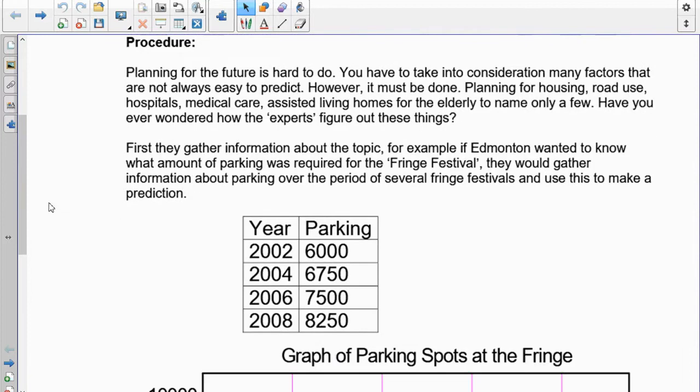When you plan for the future, it's pretty hard because you never know what's going to take place. So you have to take into consideration many factors that are not easy to predict. However, it has to be done. Planning for housing, road use, hospitals, Medicare,